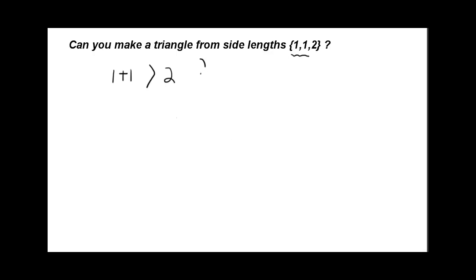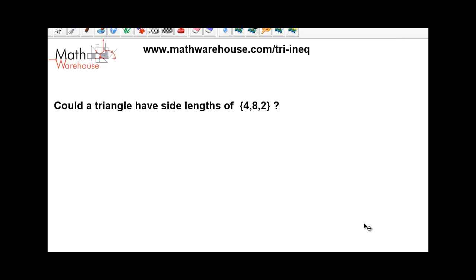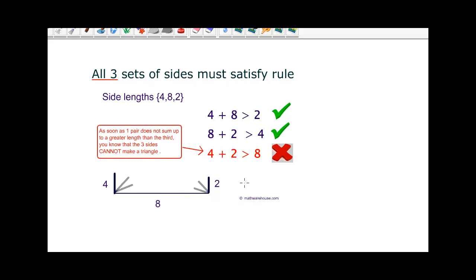Let's check out another problem — the last one of this type. Could a triangle have side lengths of 4, 8, and 2? Identify the two smaller sides: 4 and 2. Is 4 plus 2 bigger than 8? Nope. So again, we cannot form a triangle — and there's a picture of it at the bottom. 4 plus 2 is not bigger than 8.